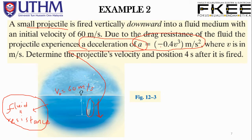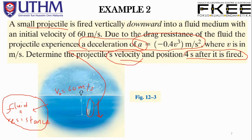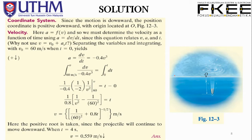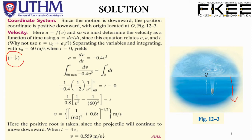Because of this fluid resistance, the projectile decelerates — hence the negative value. Determine the projectile's velocity and position after 4 seconds. Since the motion is downward, the position coordinate is defined as positive downward, with the origin at zero.